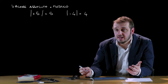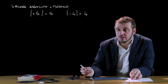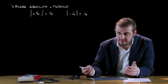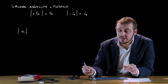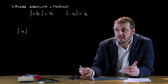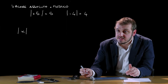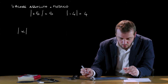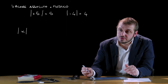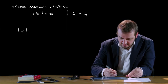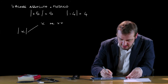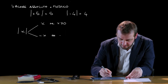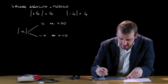Lo stesso concetto vale nel caso in cui il valore assoluto lo vogliamo calcolare di una variabile, per esempio della variabile x. Il valore assoluto di una variabile è uguale alla variabile stessa se questa è positiva, mentre è uguale all'opposto della variabile se questa è negativa. Quindi il modulo di x è uguale a x se x è maggiore o uguale di 0, ed è invece uguale a meno x per tutti quei valori per cui x risulta essere negativa.